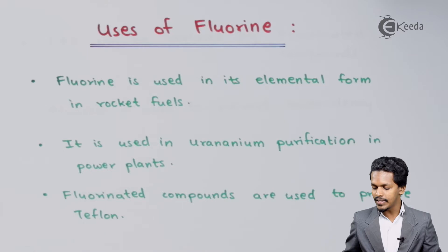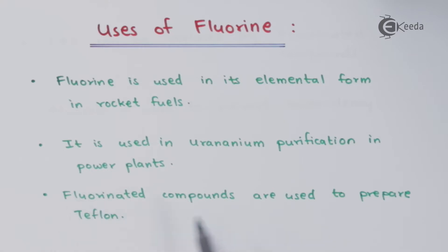Talking about the next point: fluorinated compounds are used to prepare Teflon. As we discussed in the chapter on polymers, we can easily prepare Teflon by polymerizing 1,1,2,2-tetrafluoroethene, and by doing that we can easily prepare Teflon.